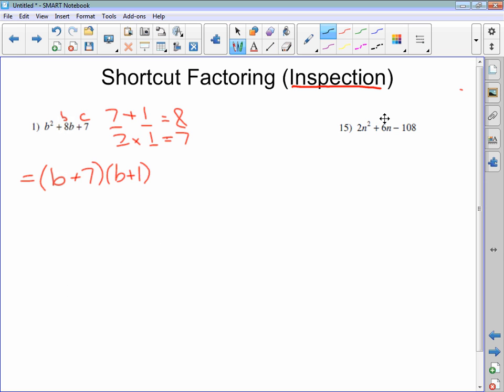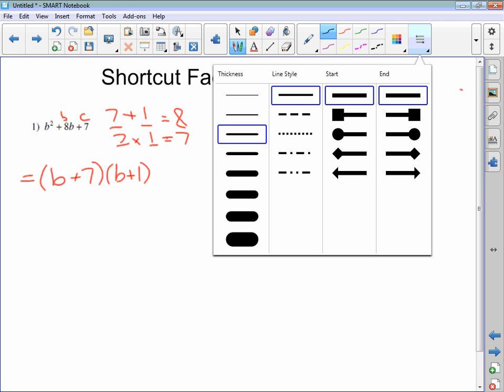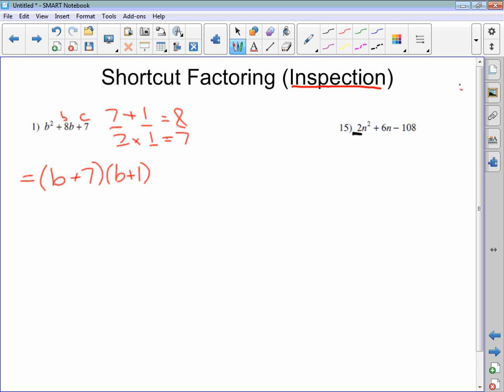What about this one here? If the a value isn't 1, we can't do inspection unless that a value is 1. So we look here. a is 2 in this case. Is 2 common to all three terms? Yes, it sure is. We can do common factoring. Divide 2 out of each of those. You get 2n squared divided by 2 is just n squared. 6n divided by 2 is 3n. And 108 divided by 2 is 54.